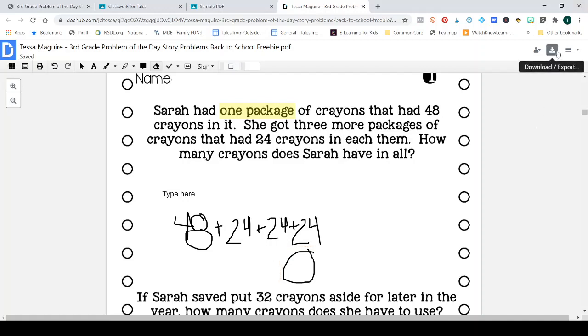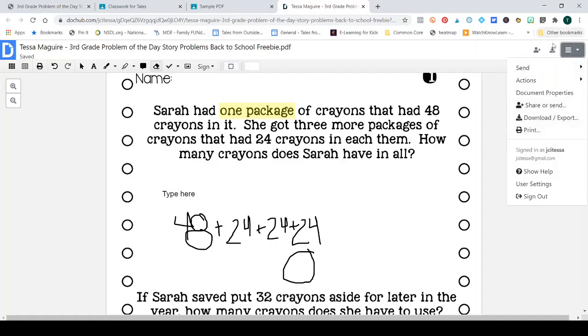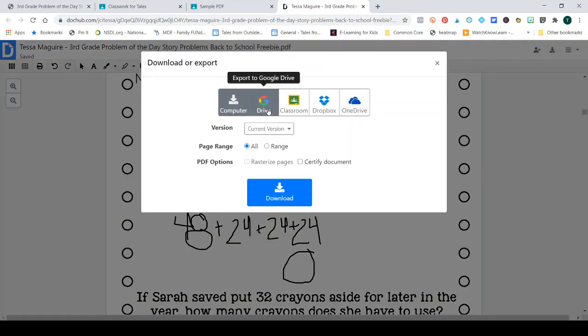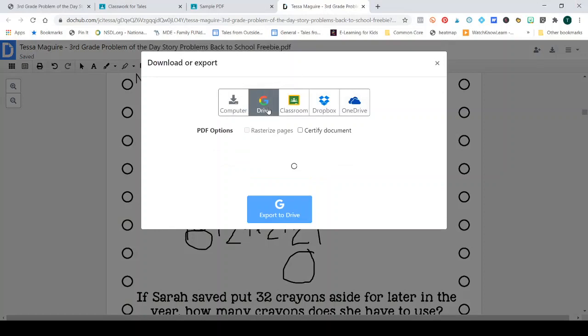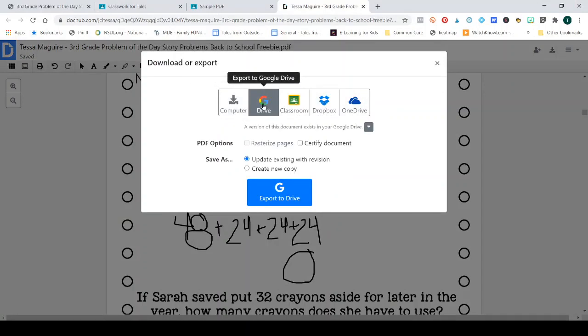So I come over here to download export. You can also get to that under that dropdown. So I click and I go to Google Drive. I don't want to download it to my computer because I want to keep it on the web to share with my teacher. I update my existing with the revision.